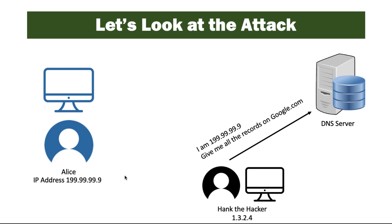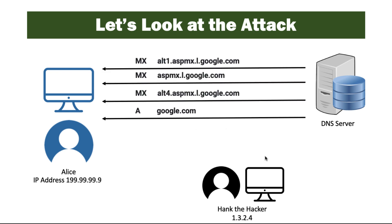So in this attack, Hank tells the DNS server that he is 199.99.99.9, which obviously he's not — that's Alice's IP address. And Hank asks the DNS server to give him all of the records about google.com. The DNS server doesn't know that that's not a correct request, so it will respond to Alice with all of the Google records.